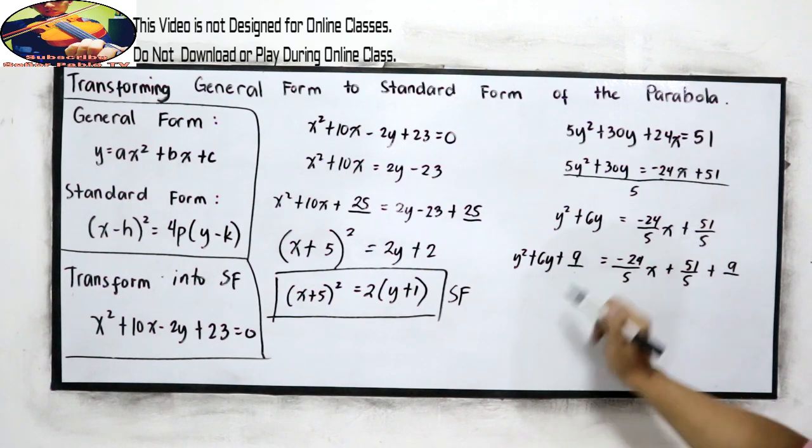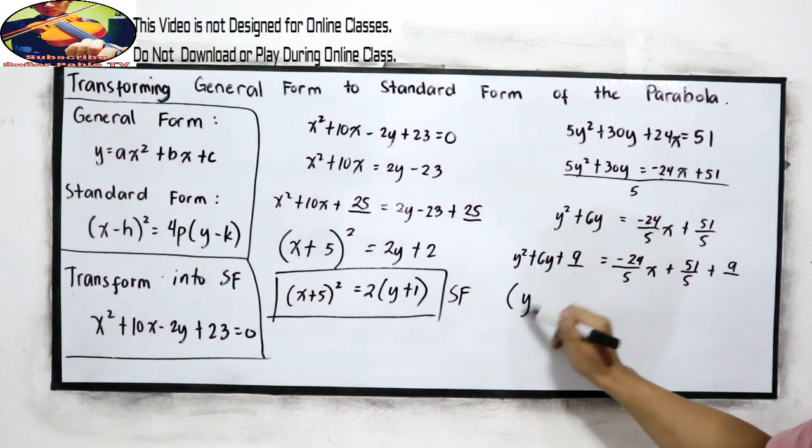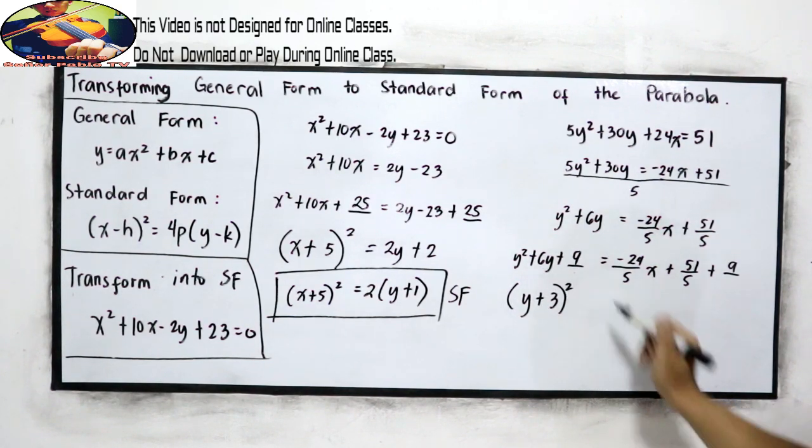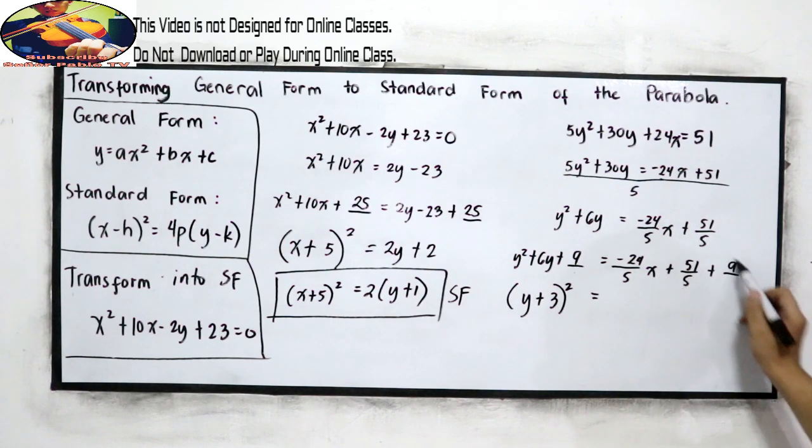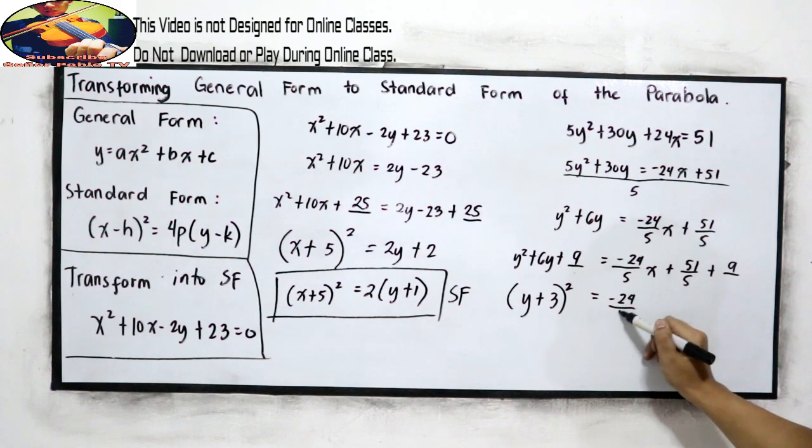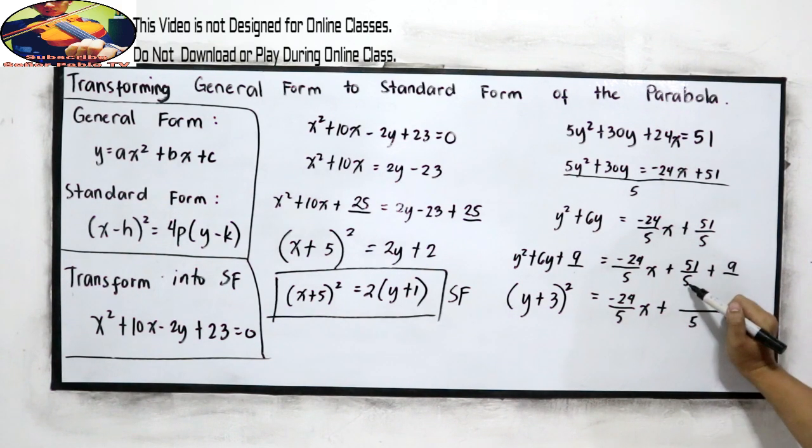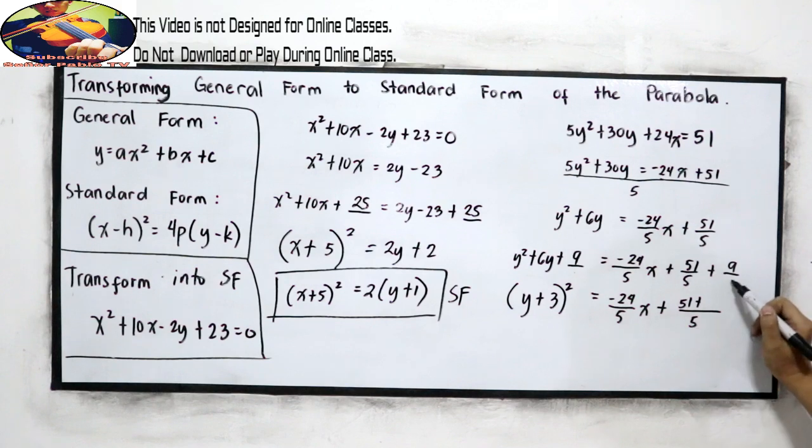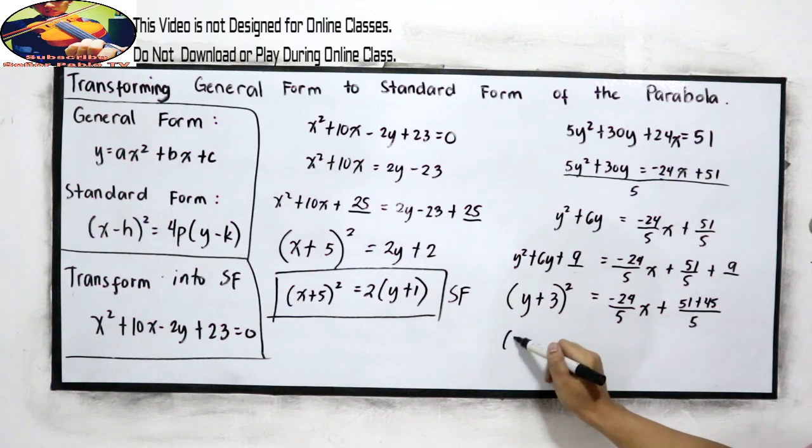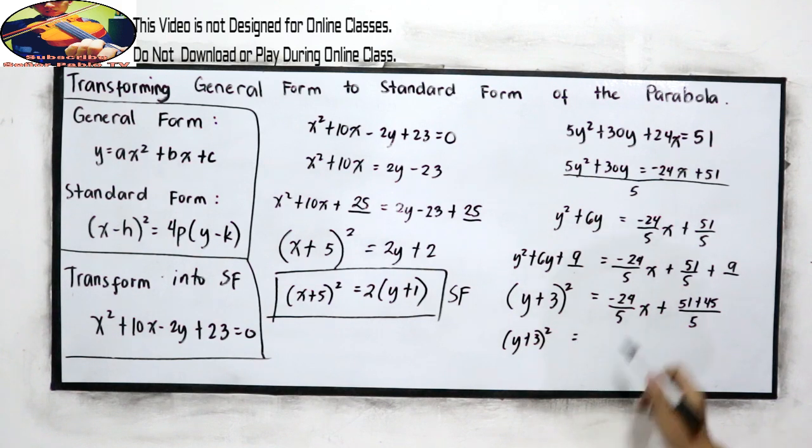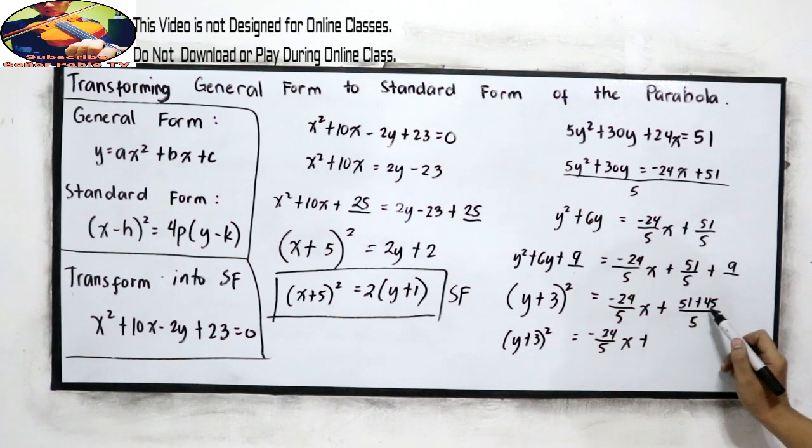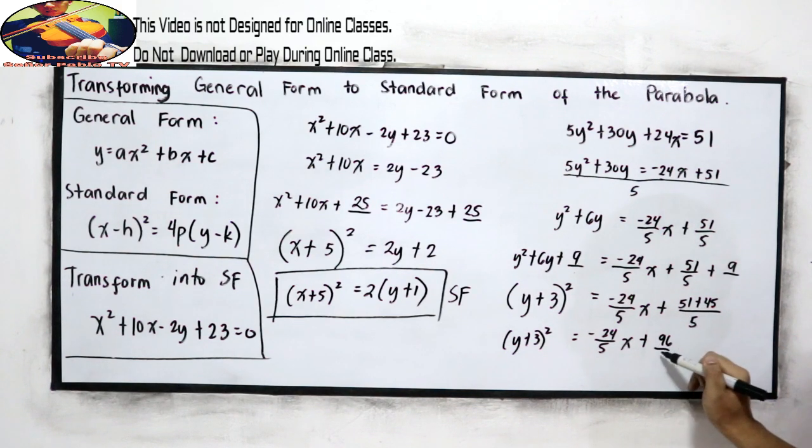Okay, this is now a perfect square trinomial. Write into the square of a binomial. That is y plus square root of 9, 3 squared. Is equal to combine negative 24 over 5x. Let's combine. LCD is 5. 5 divided by 5, that is 1 times 51. So 51 plus 5 divided by 1, that is 5 times 9, 45. Now we have y plus 3 squared equals negative 24 over 5x. So 51 plus 45, that is 96 over 5.